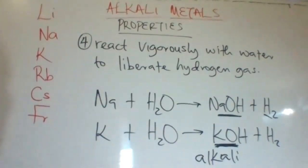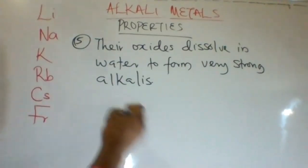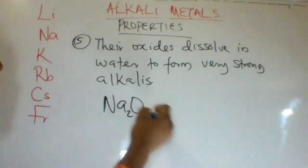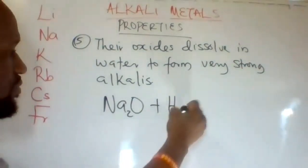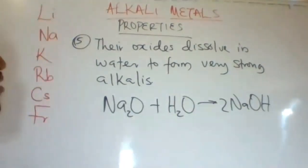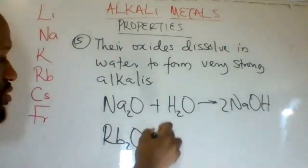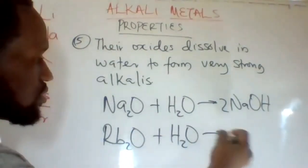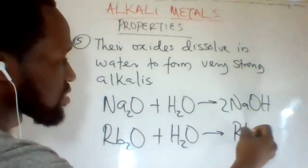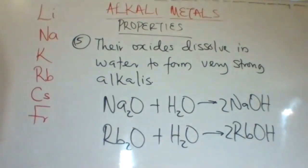The oxides of alkali metals also dissolve in water to form very strong alkalis. For example, sodium oxide dissolves in water to form sodium hydroxide. Rubidium oxide also dissolves in water to form rubidium hydroxide.